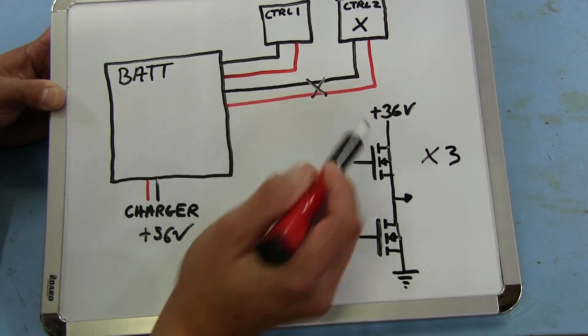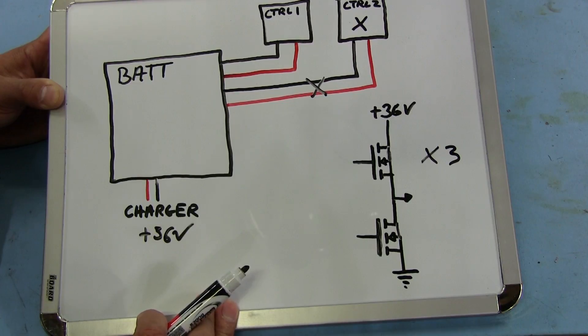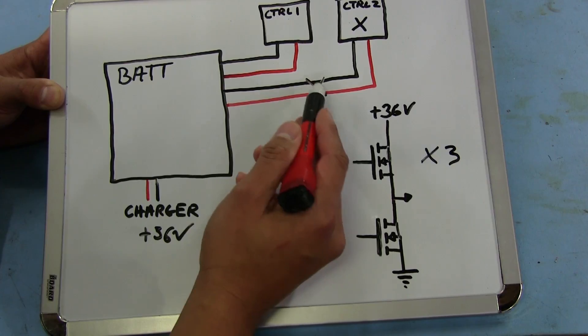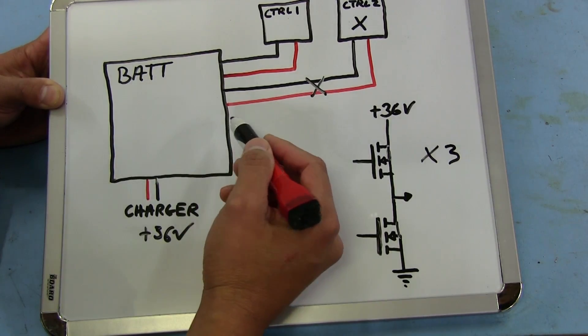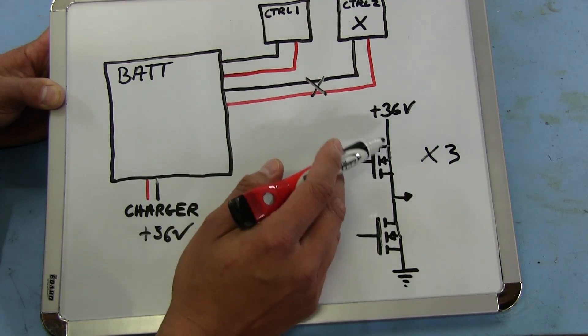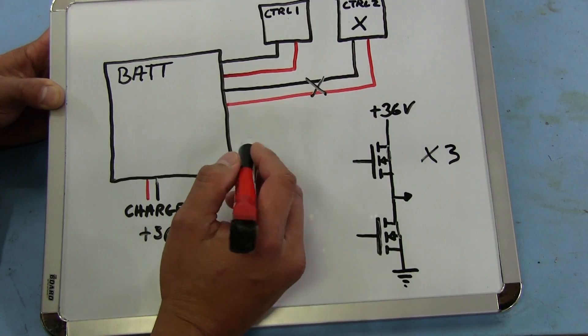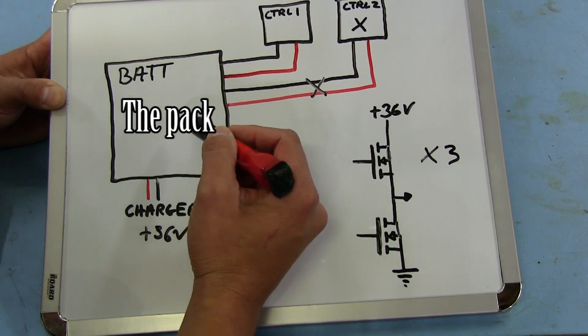So how come nothing burned up here? If this was shorted directly to the battery and we were shorting directly across these MOSFETs here?